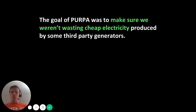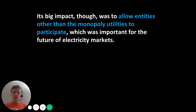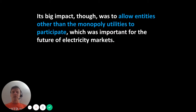The goal of PURPA was, in essence, to make sure we weren't wasting cheap electricity — in the spirit of protecting the United States economically against the vulnerabilities identified during the oil crises of the 1970s. Its big impact, though, was really to make it legally acceptable for entities other than the monopoly utilities to participate. This was critically important for the future of electricity markets.